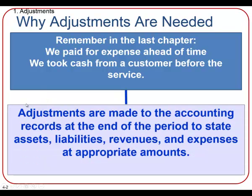In this chapter, we're introduced to adjustments, and these adjustments are made to the accounting records at the end of the period to ensure assets and liabilities are reported at appropriate amounts. These adjustments also ensure that the related revenues and expenses are reported in the proper period, as required by the revenue recognition and the expense recognition principles we talked about in the last chapter.